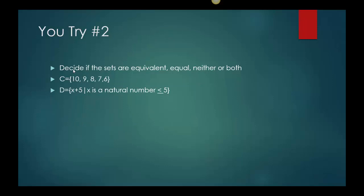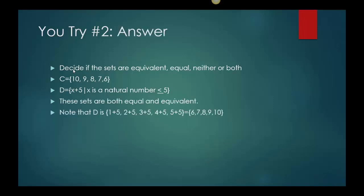Here's another one: decide if these are equivalent, equal, neither, or both. So C={10,9,8,7,6} and then D={x+5 | x is a natural number less than or equal to 5}. If you need to stop a minute and try that one, that's okay, and then come back and check it out.